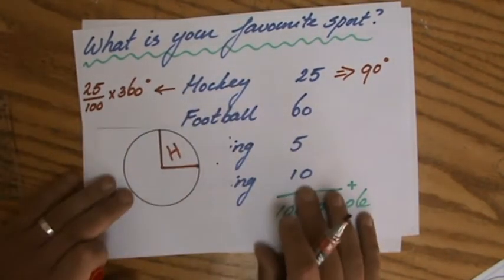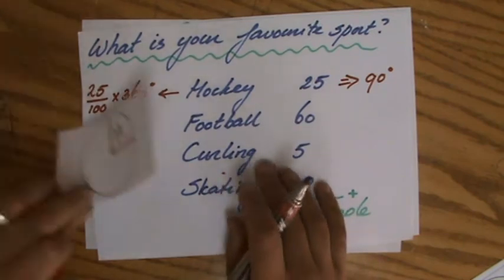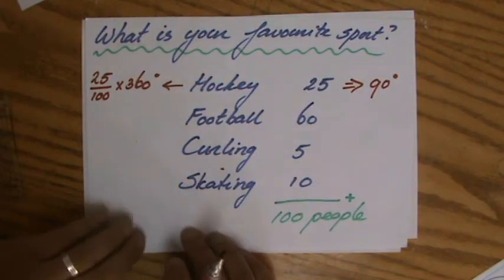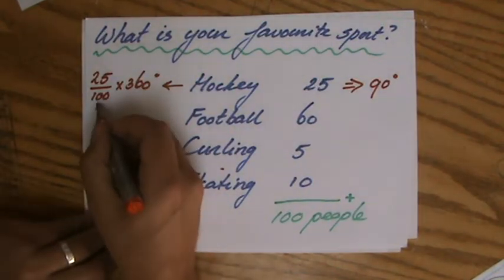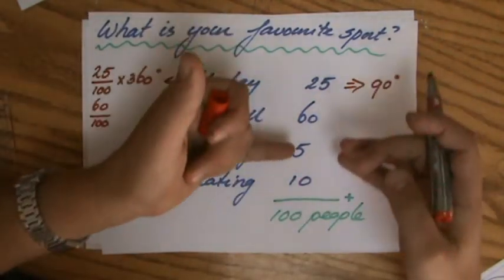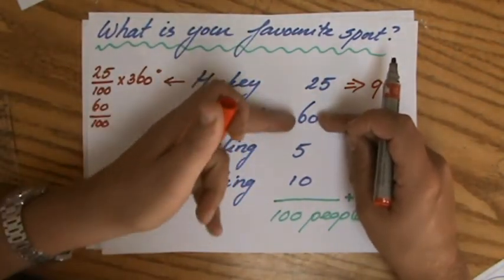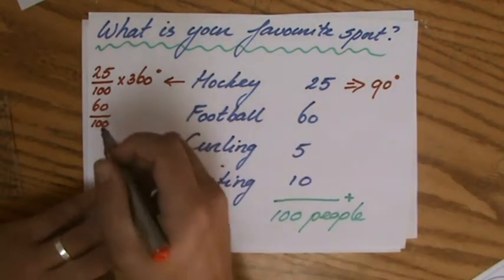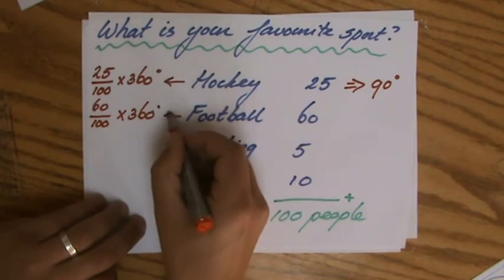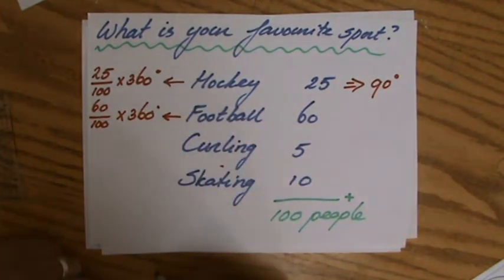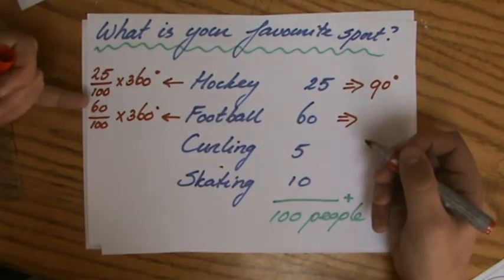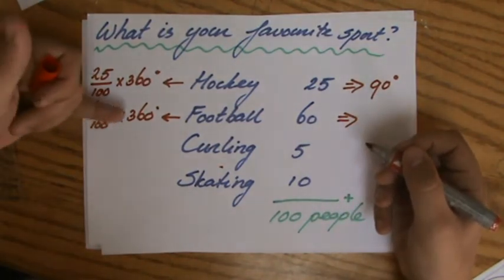What about football? Which part of the people like football? That is 60 out of 100. So I need to know the total amount of people I've asked. 60 like football out of 100, so it's going to get that part of the pie chart, which consists of 360 degrees. If you do that in your calculator, 60 over 100 times 360, it's going to say 216 degrees.